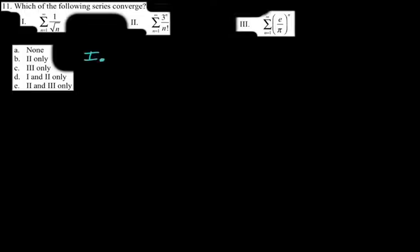Which of the following converge? Number one is a p-series with p equal to one half. One half is less than one, which means this is a divergent p-series, so that diverges.